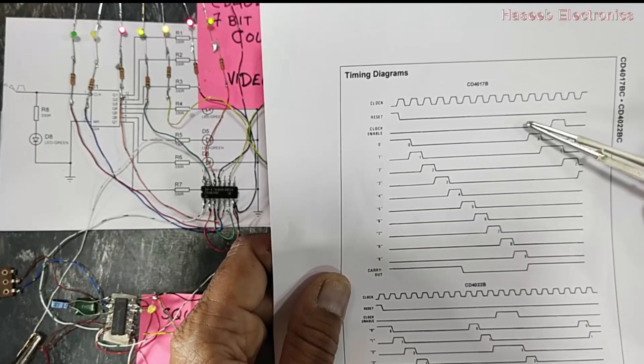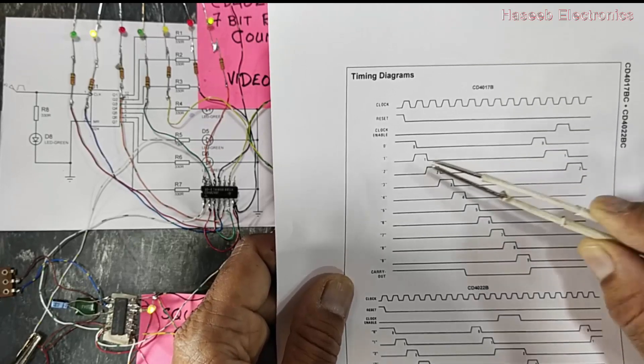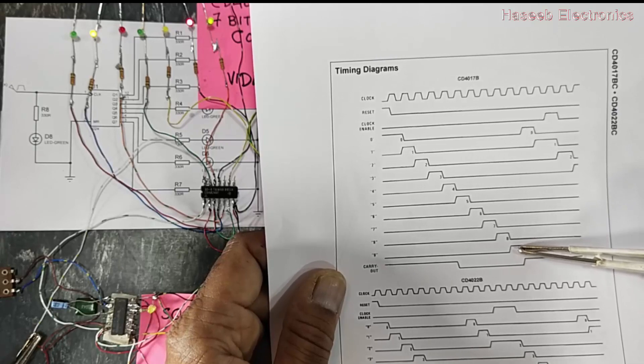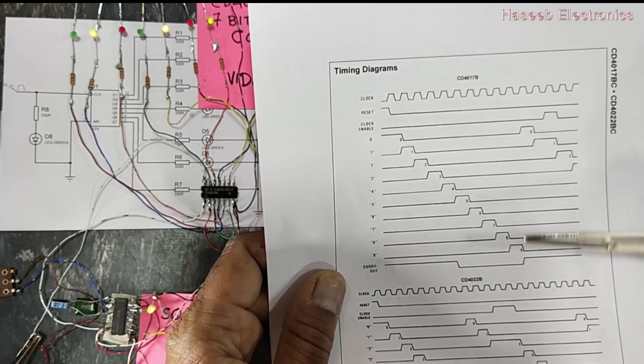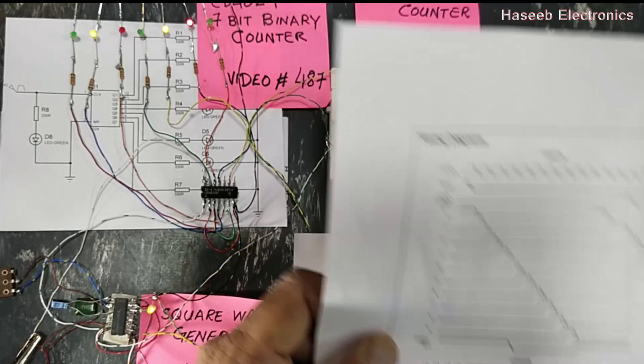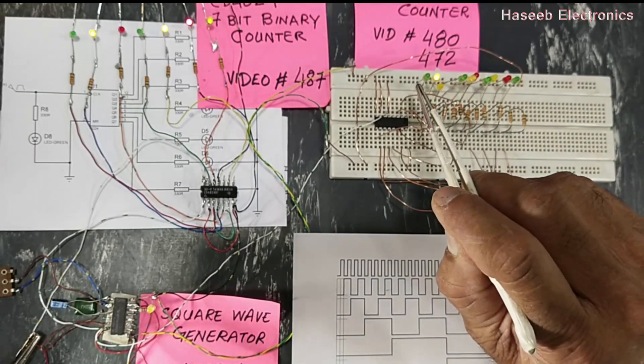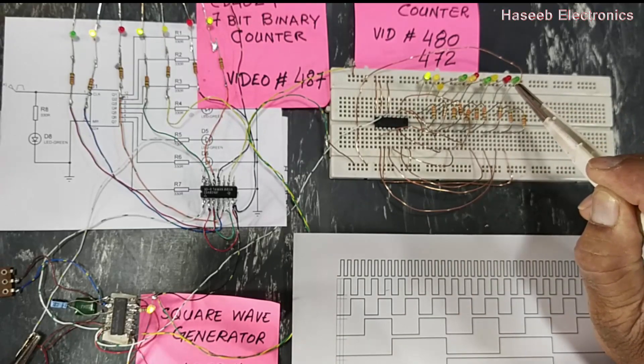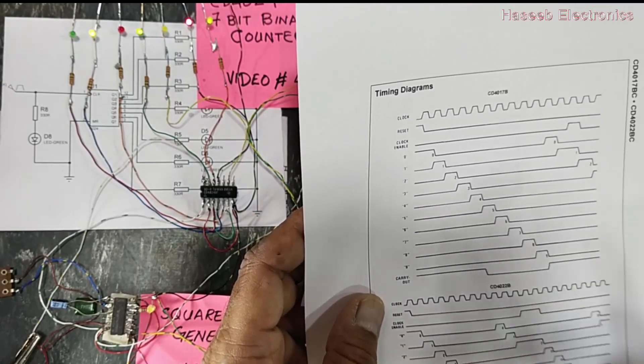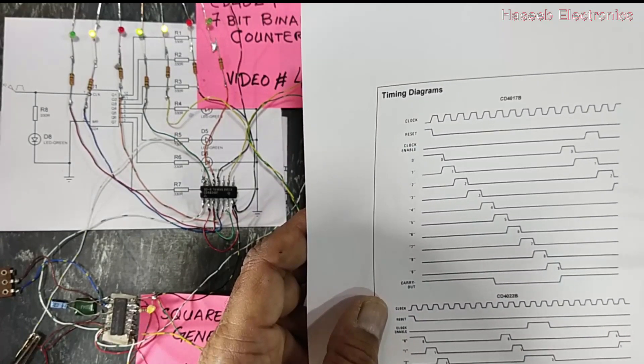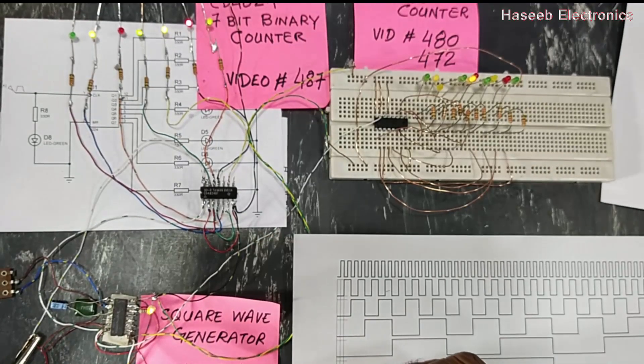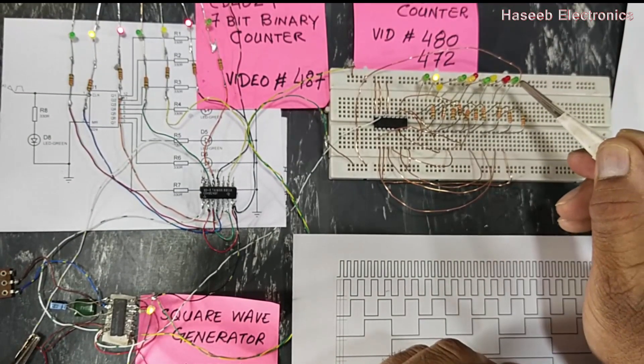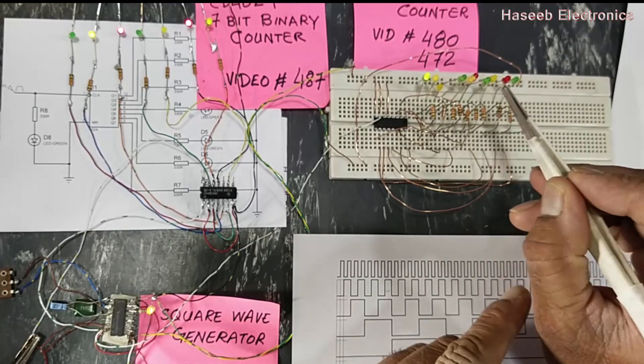After the tenth pulse, the sequence will start from output number zero again. When output number nine, the last pin, goes low, the next pulse will switch it down. After the last pulse the system will restart. This is the function of CD4017 - it is a decade counter and it will divide the frequency by 10.